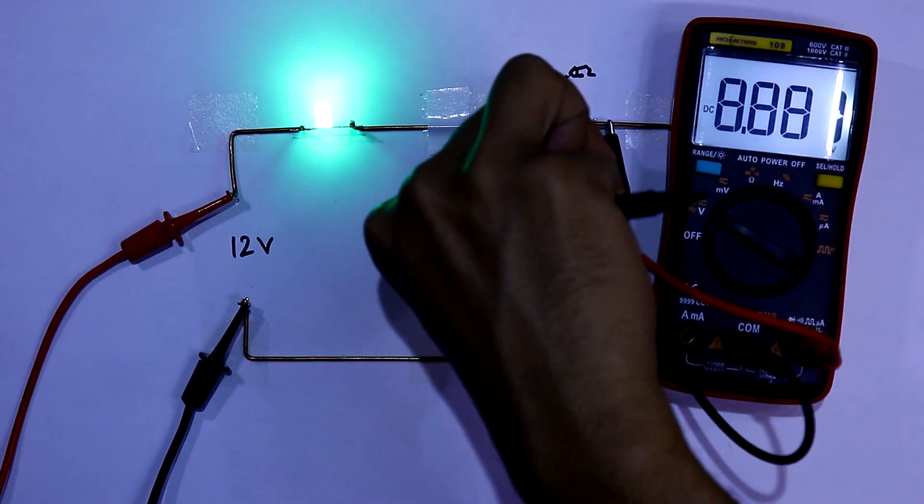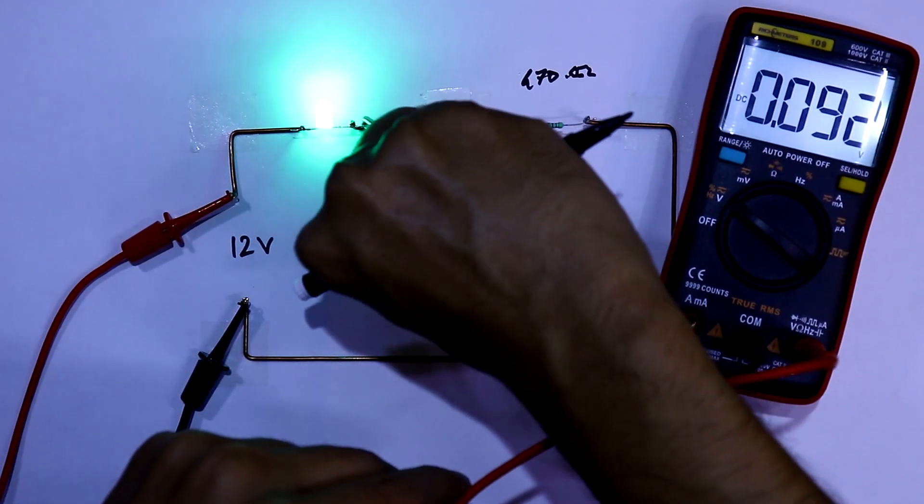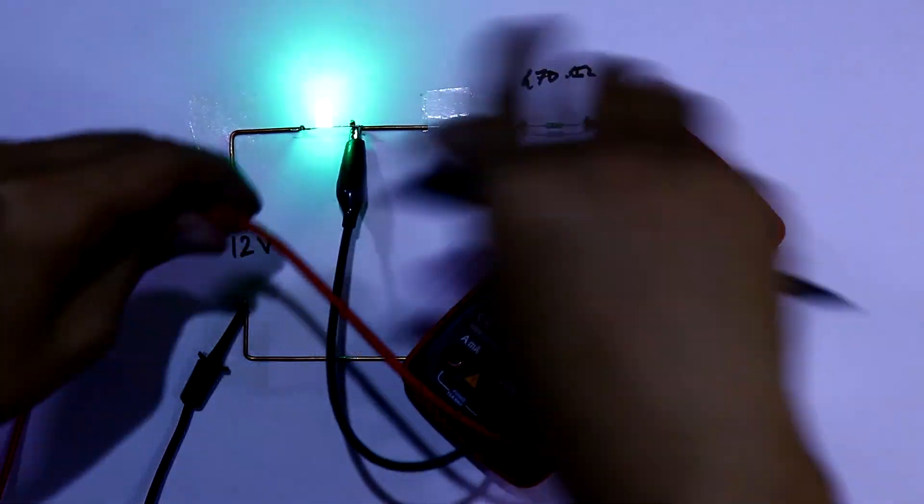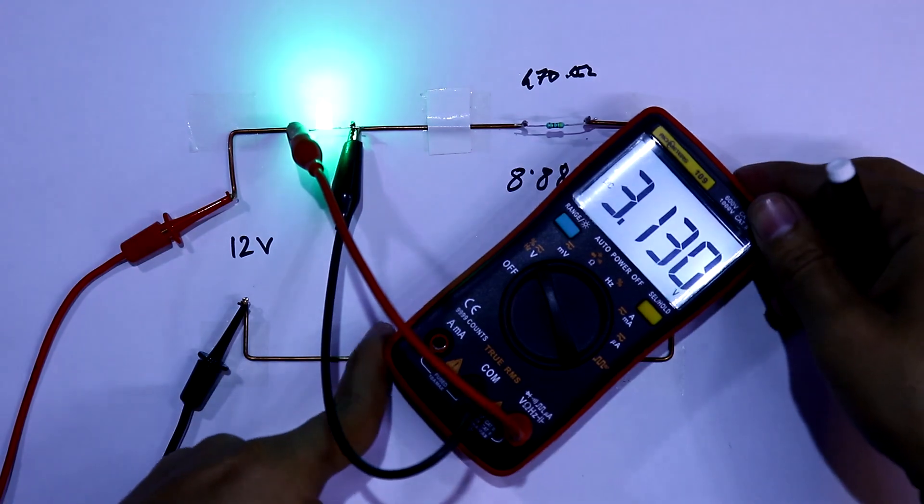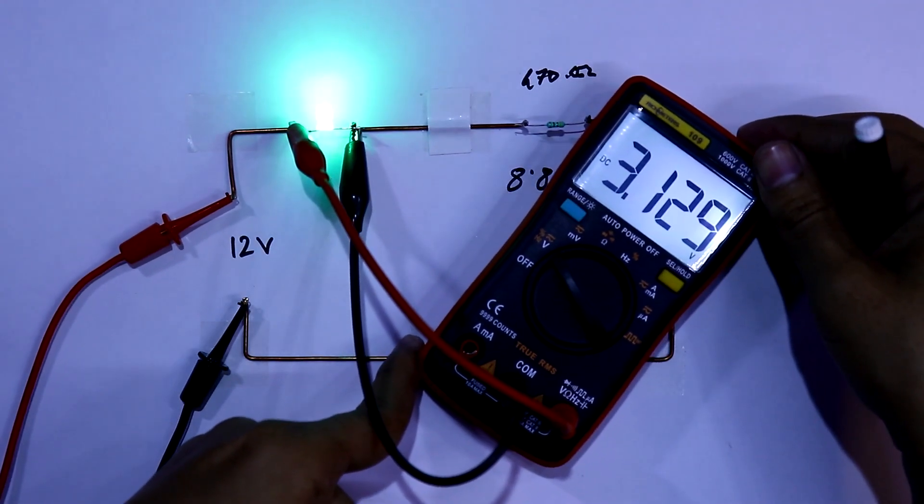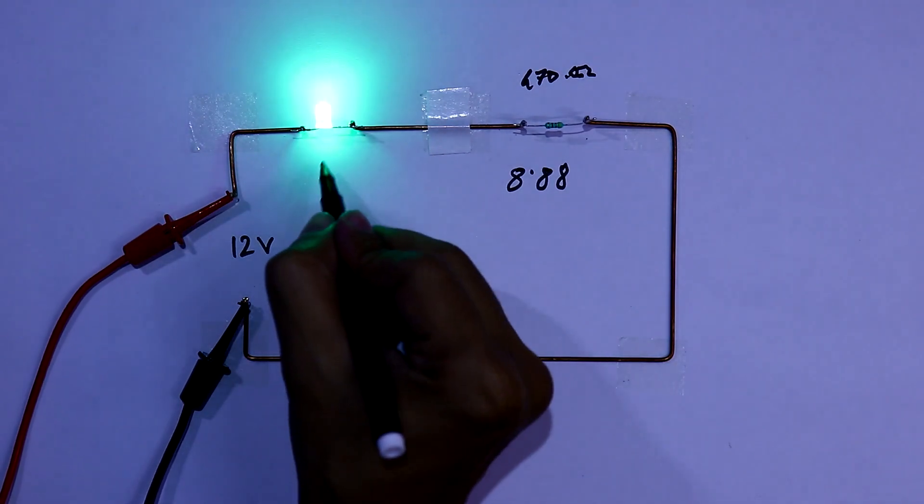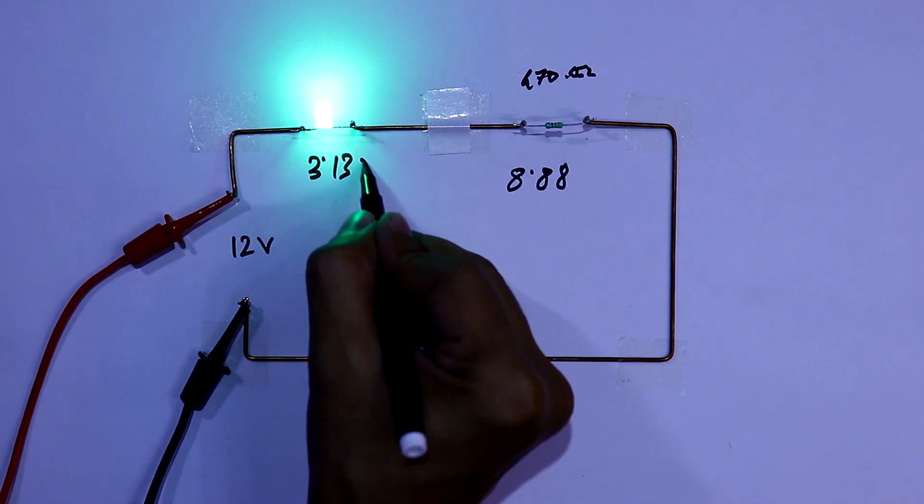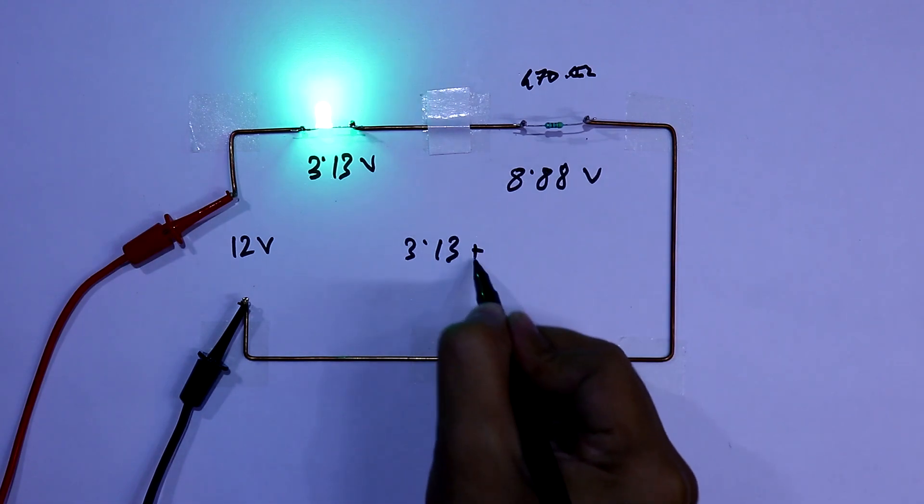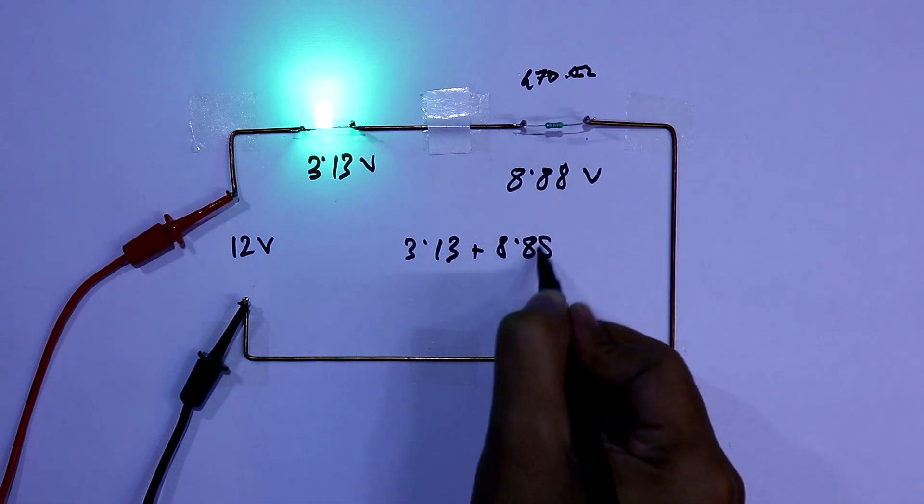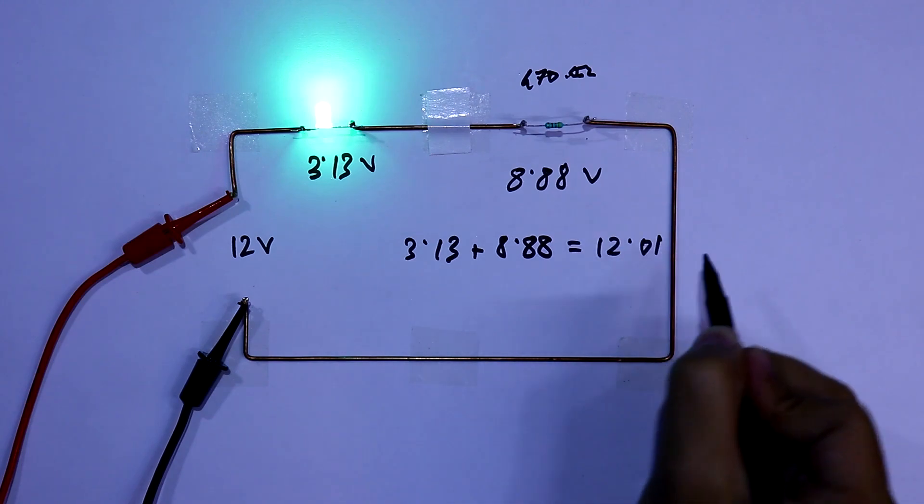And if we want to know the voltage drop at LED, it is 3.13V. 3.13 plus 8.88 equals 12.01V.